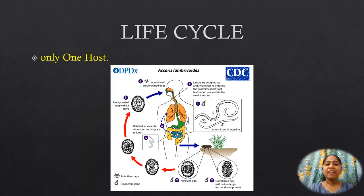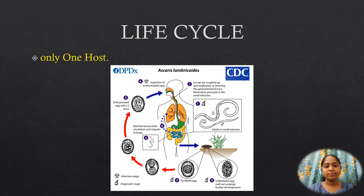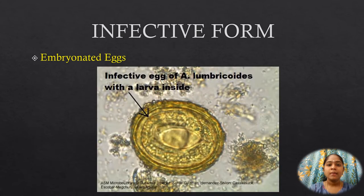The life cycle of Ascaris involves only one host — the natural host being man. There is no intermediate host. The infective form of Ascaris lumbricoides is the embryonated egg produced by females after mating with a male worm.